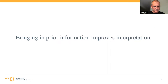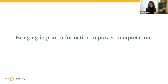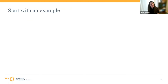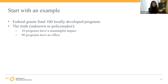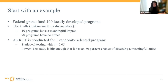To show the magnitude of this misinterpretation: imagine that federal grants from IES have funded 100 locally developed programs. The truth—hidden from the researcher—is that 10 of these 100 programs have meaningful impacts and 90 have no impact at all. Due to limited budgets, we're going to conduct a randomized control trial for just one of those 100 locally developed programs, randomly selected.